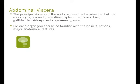Now we're going to talk about the abdominal viscera — the esophagus, stomach, intestines, spleen, pancreas, liver, gallbladder, kidneys, and suprarenal glands. What I want you to know for each organ is its major function, its major anatomical features, and for some of them, their arterial supply as well.